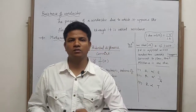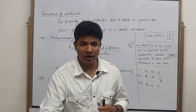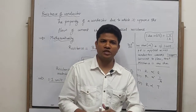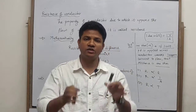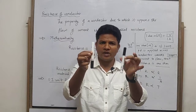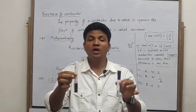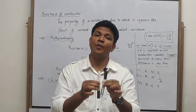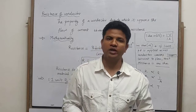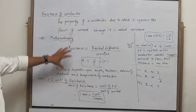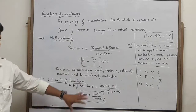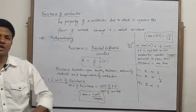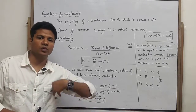Regarding material: resistance is different for each material. So we have covered the definition of resistance, its formula, its SI unit, the symbol ohm, and how resistance depends on length, area of cross-section, temperature, and material of the conductor.